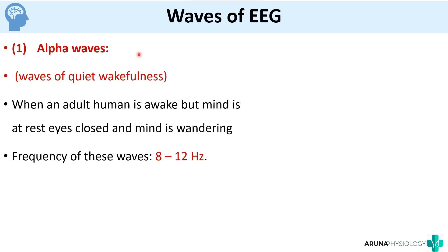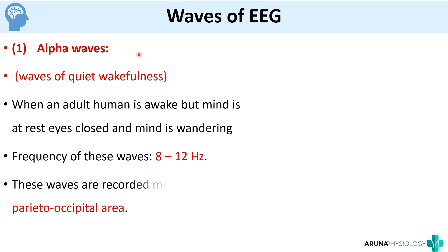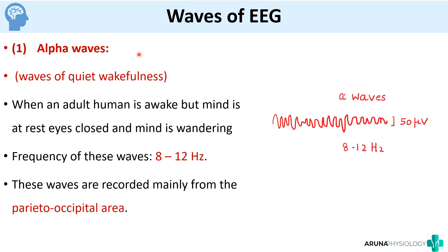For each wave there is a specific area where you will get that wave the most. Alpha waves are recorded mainly from the parieto-occipital area. This is a representative diagram showing the alpha waves — you can see that the frequency here is around 8 to 12 and the amplitude is around 50 microvolts. So these are the alpha waves.